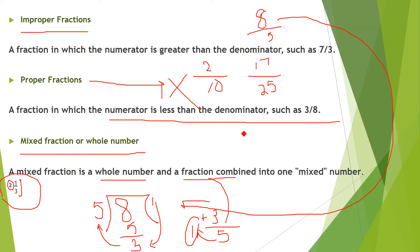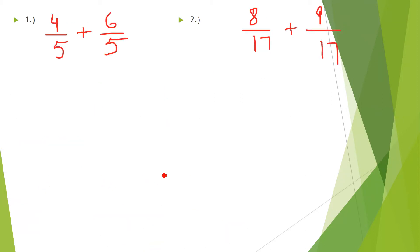Now we are going to solve questions. If your answer is an improper fraction, convert it to a mixed fraction. If the answer is a proper fraction, you cannot convert it to a mixed fraction. For simple addition: 4 + 6 = 10, 5 + 5 = 10, 2 + 3 = 5.